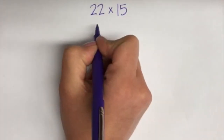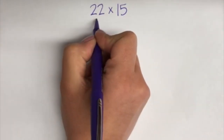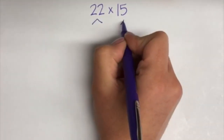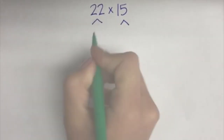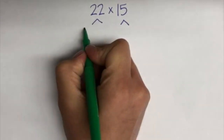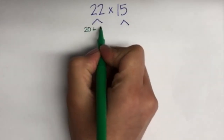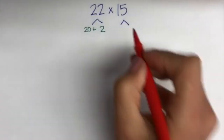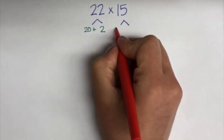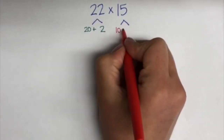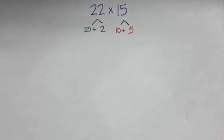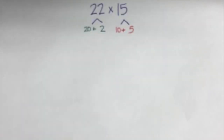Our first step is to break apart our factors into tens and ones. 22 can be broken apart into 20 plus 2, and 15 into 10 plus 5. These numbers will be much easier to work with.